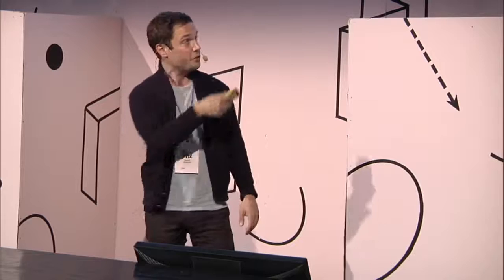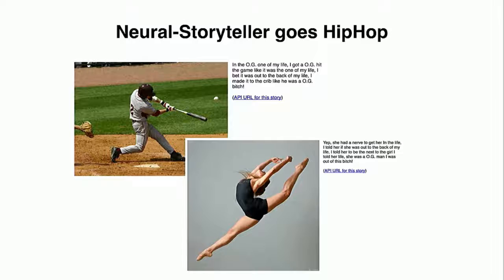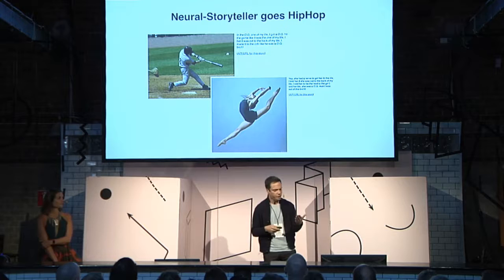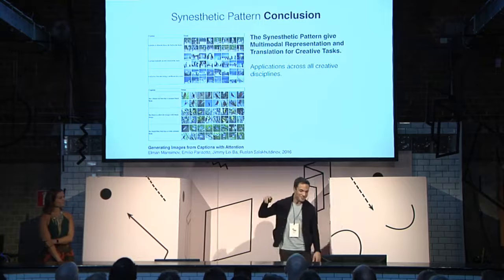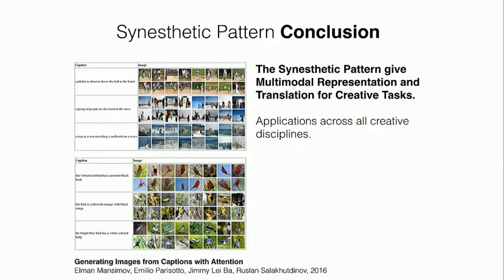We can train it on different stuff — for example hip-hop, which we've done for a big consumer brand: 'In the OG of my life I got the OG hits.' This was the first neural net that had to be censored because it kept saying 'fuck' and 'shit' in front of a big client meeting. In conclusion, the Synesthetic Pattern gives you multimodal representation and translation for creative tasks. The idea that we're stuck as 'I'm an image designer' or 'I'm a musician' is absolutely passé. We're going to a world where multimodality becomes standard — you type a sentence and it generates an image for you. Extrapolate that a couple of years and you'll get movies.